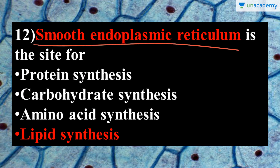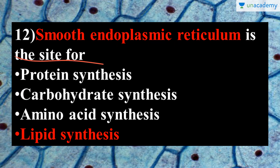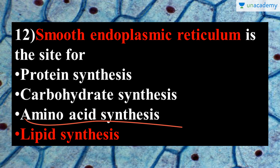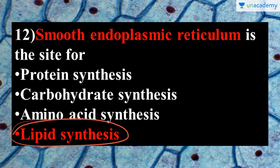The next question is: smooth endoplasmic reticulum is the site for what? Smooth endoplasmic reticulum lacks ribosomes and therefore does not have protein synthesis machinery. It is mainly known for lipid and hormone synthesis. Proteins and amino acids are synthesized on rough endoplasmic reticulum, but lipids are mainly synthesized on smooth endoplasmic reticulum. The correct answer is lipid synthesis.